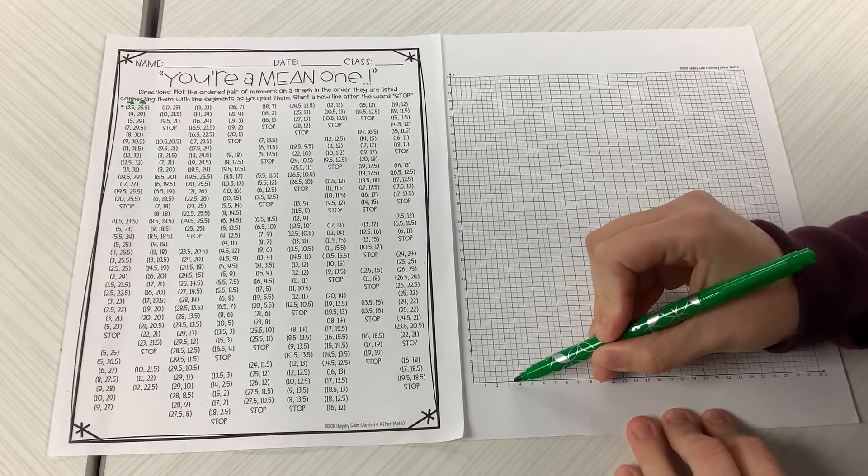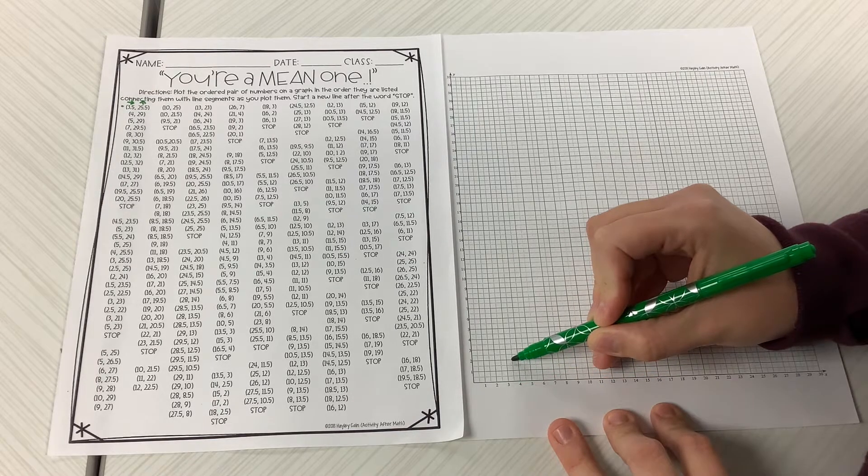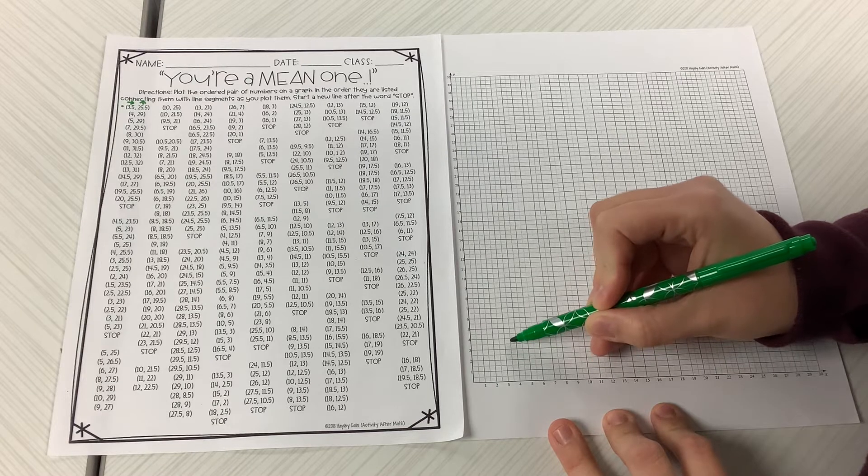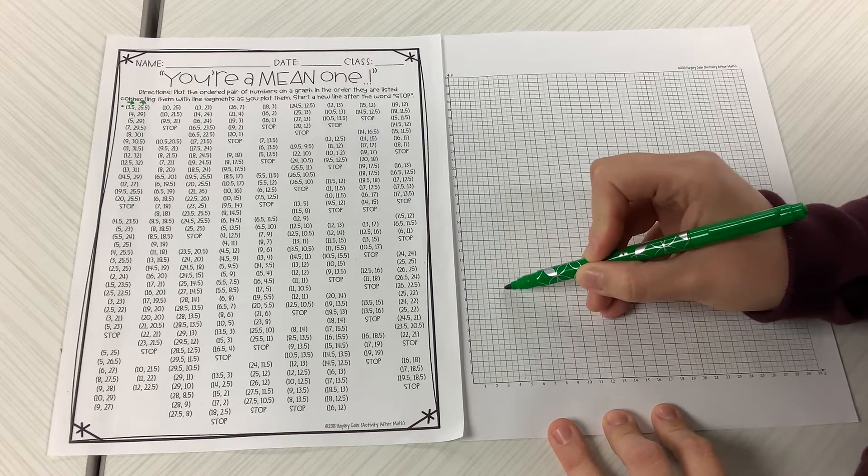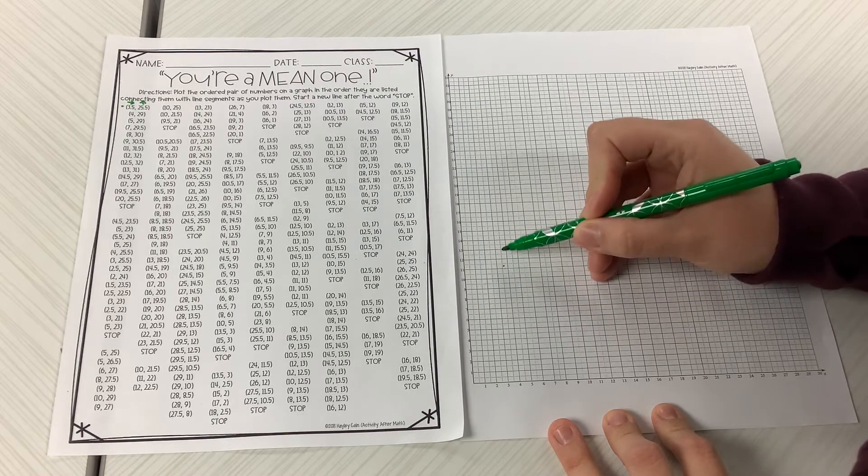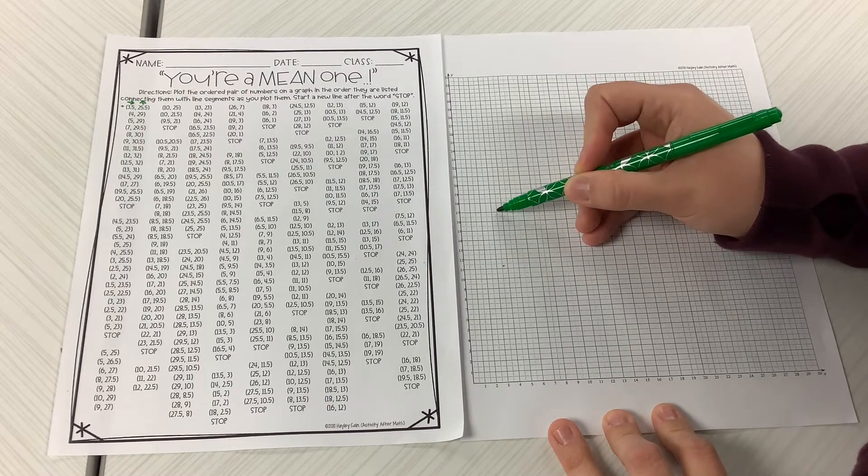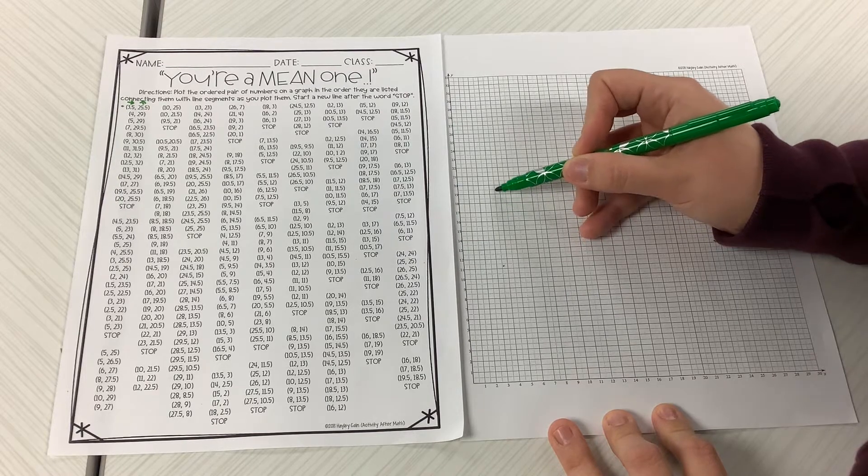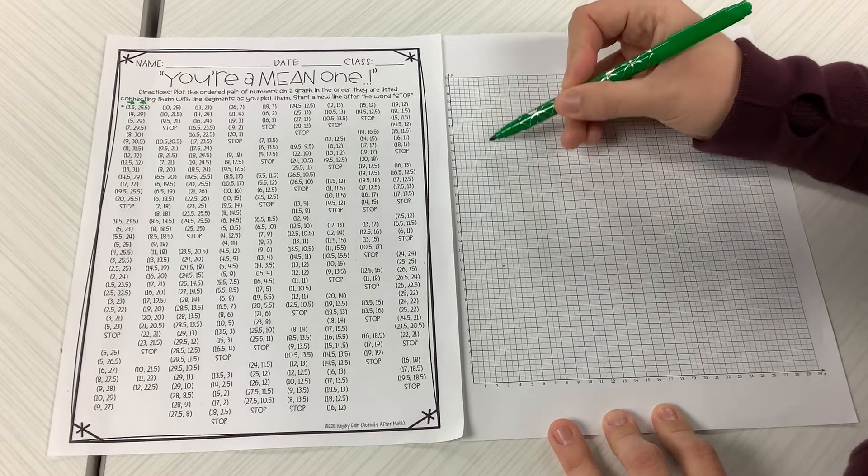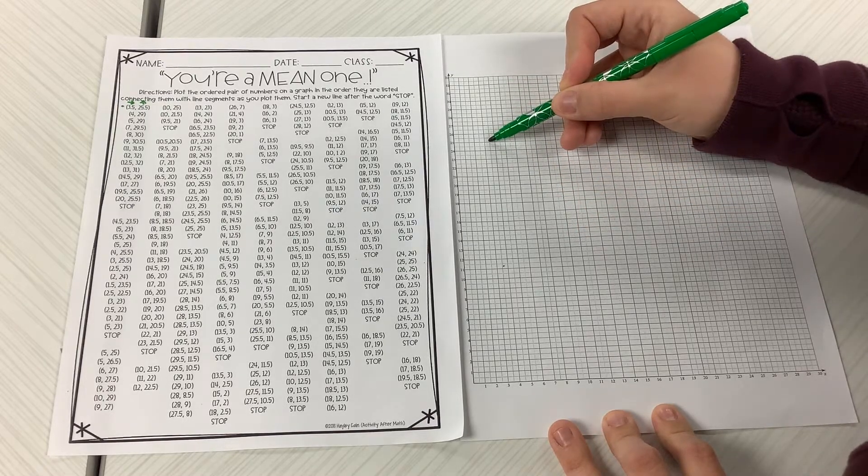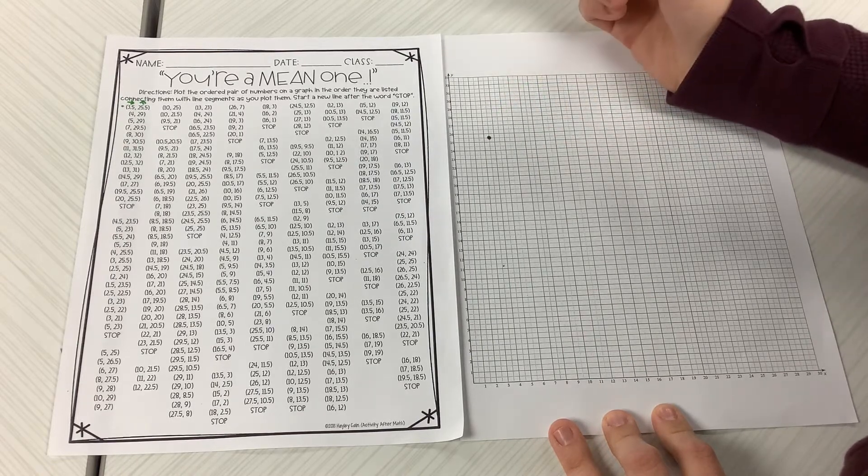So I'm going to follow this line going up to 25 and a half. So that'd be one, two, three, four, five, six, seven, eight, nine, 10, 11, 12, 13, 14, 15, 16, 17, 18, 19, 20, 21, 22, 23, 24, 25. Then I'm going to go half a spot further to make my first dot.